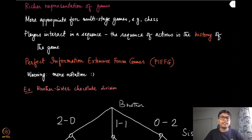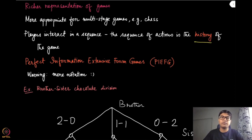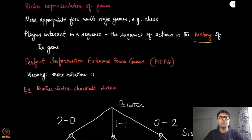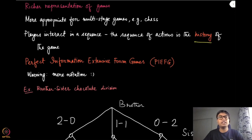This sequence of actions we will sometimes call the history of the game. The first type of representation of this kind of game is called perfect information extensive form games. Extensive form games generally refer to the case where you are representing the game as a game tree — not just in the form of a matrix — and it automatically means that there are multiple stages inside the game. The perfect information aspect comes from the fact that all the players can look at the history and all the moves of the other players; every intermediate state of the game is completely visible to all the players.